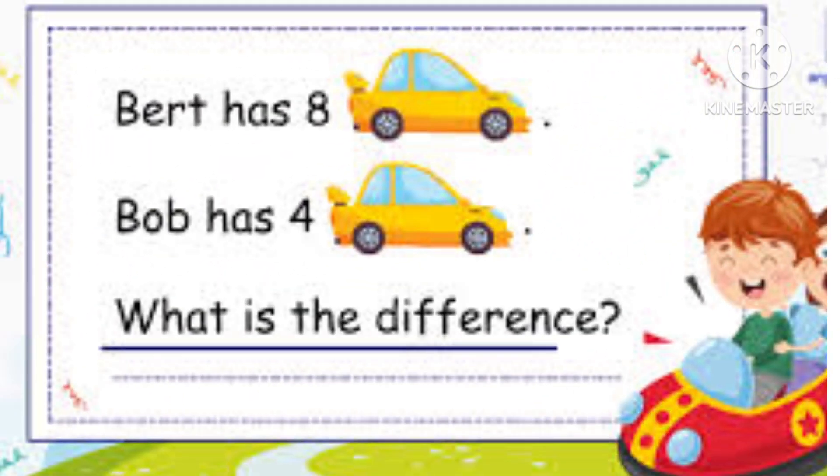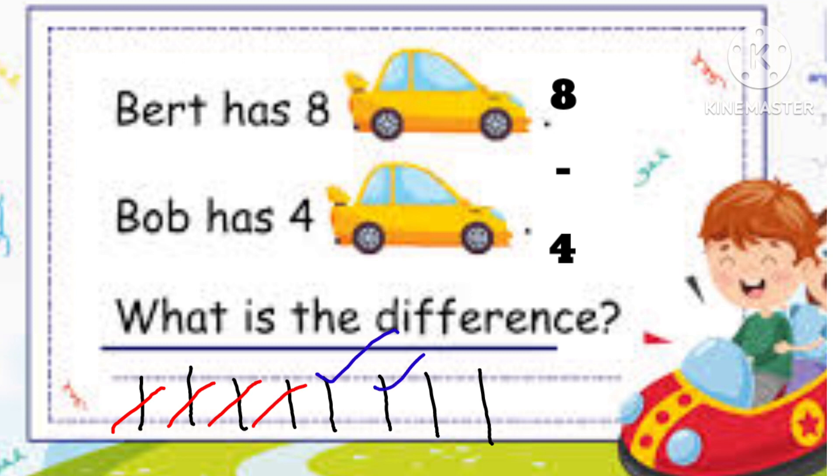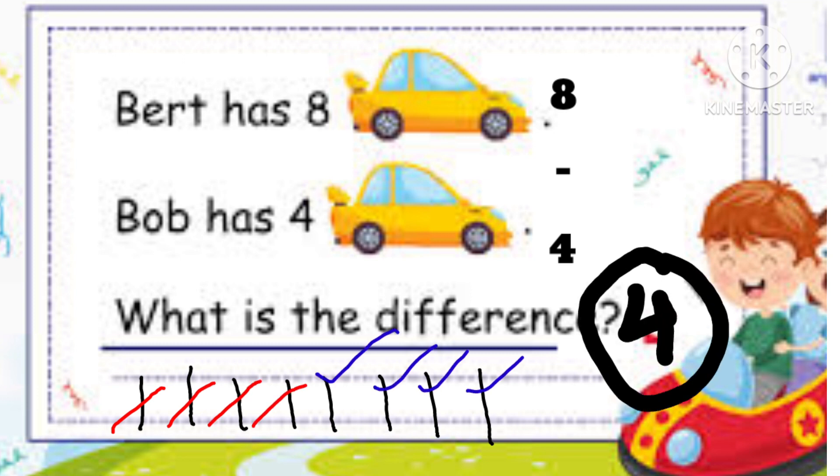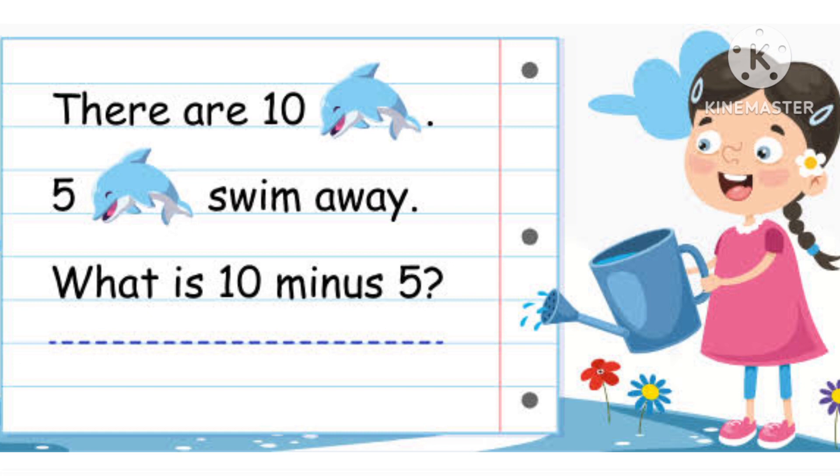Bert has 8 cars and Bob has 4 cars. What is the difference? First we will draw 8 lines and then we will cut 4 lines. So how many lines are left? 4. So the difference is 4.